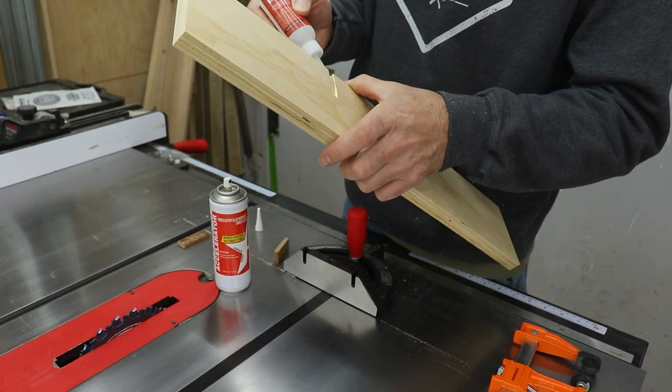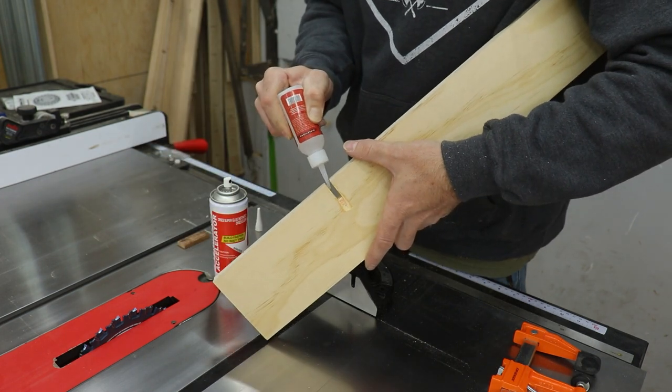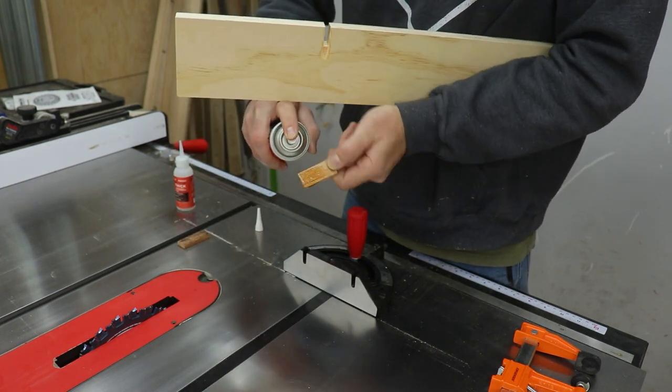Then out of the two pieces that you cut off the strips, figure out which one fits the best and then glue it in. I just usually use CA glue with activator, works pretty good.